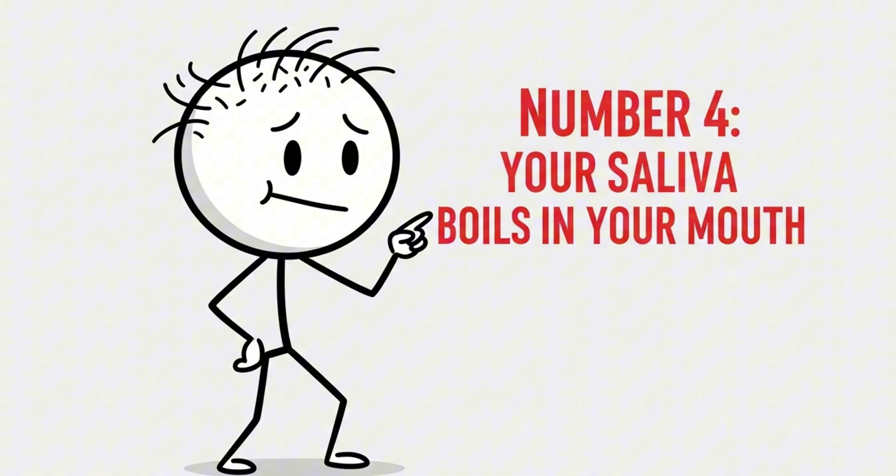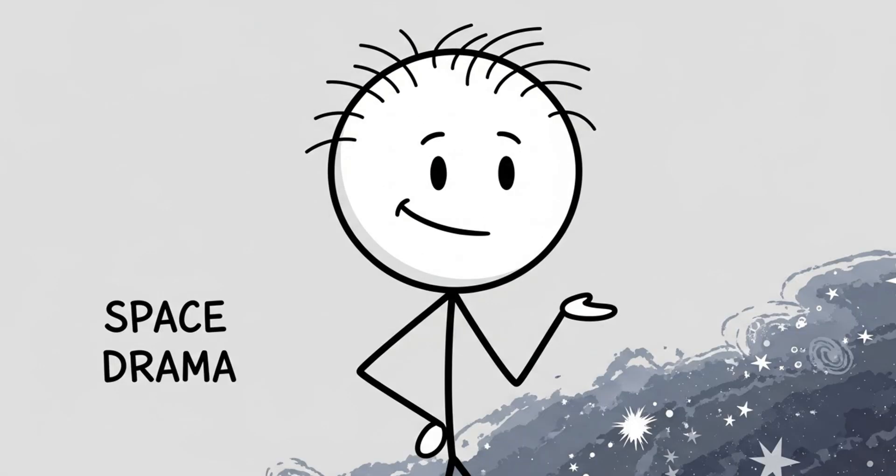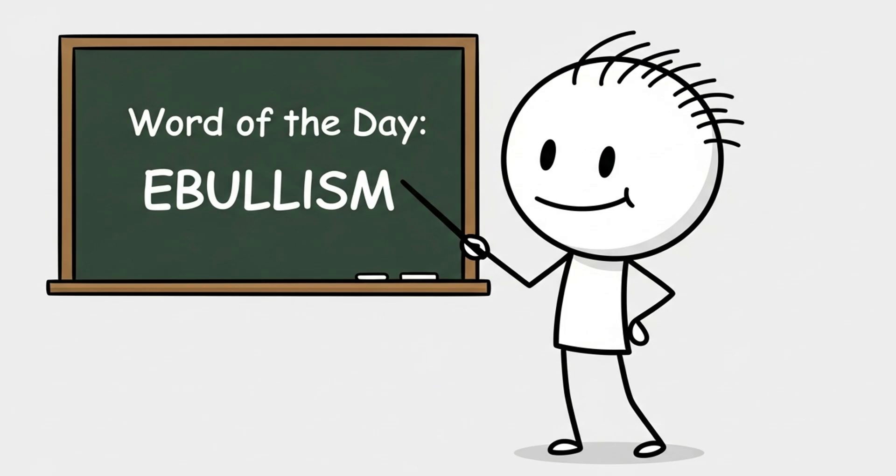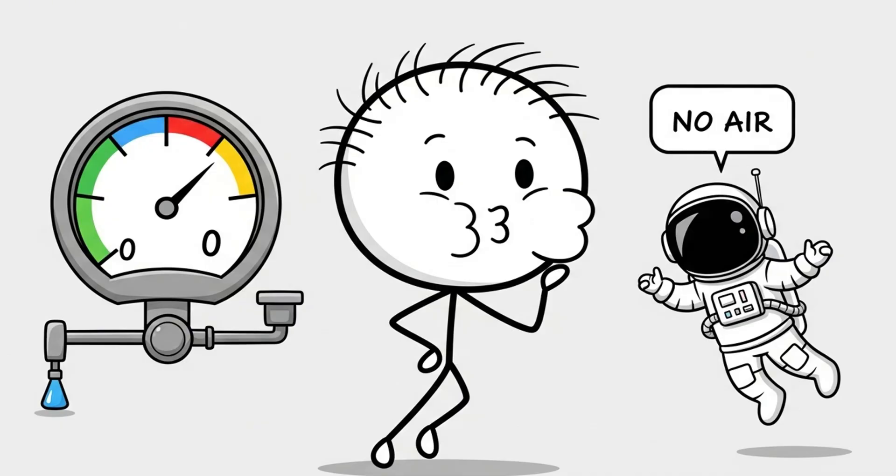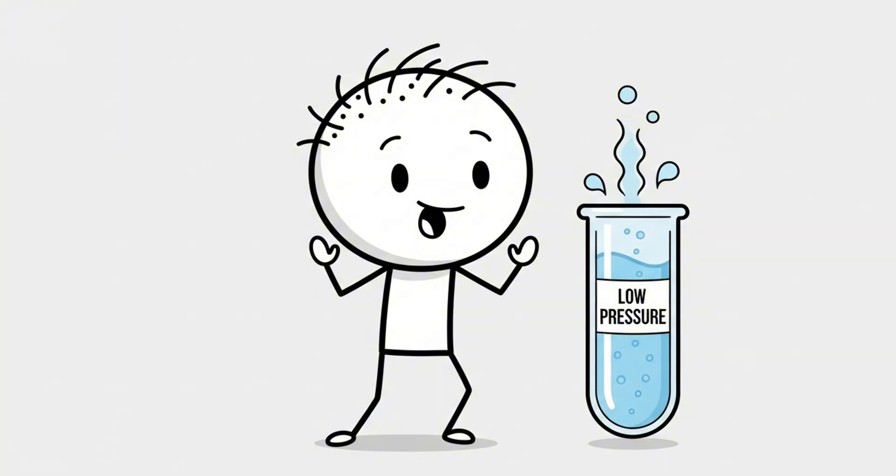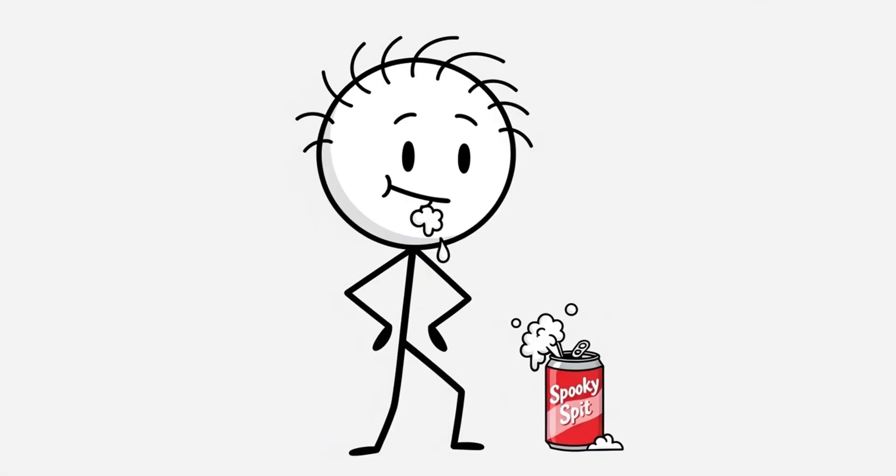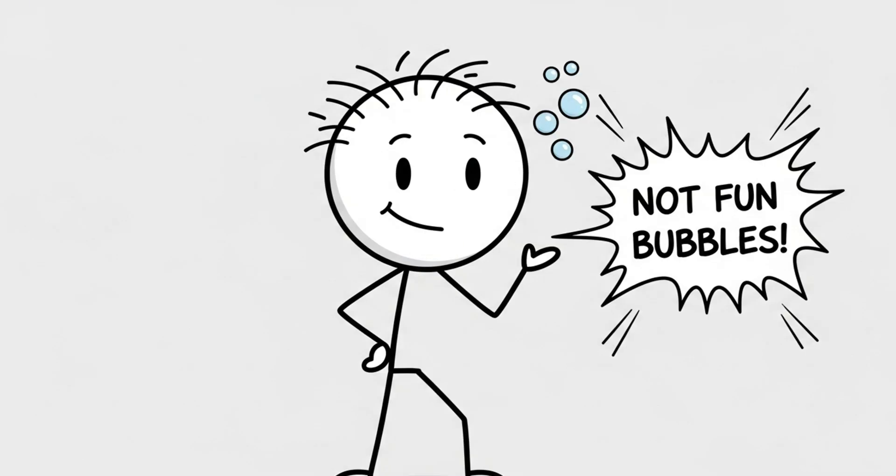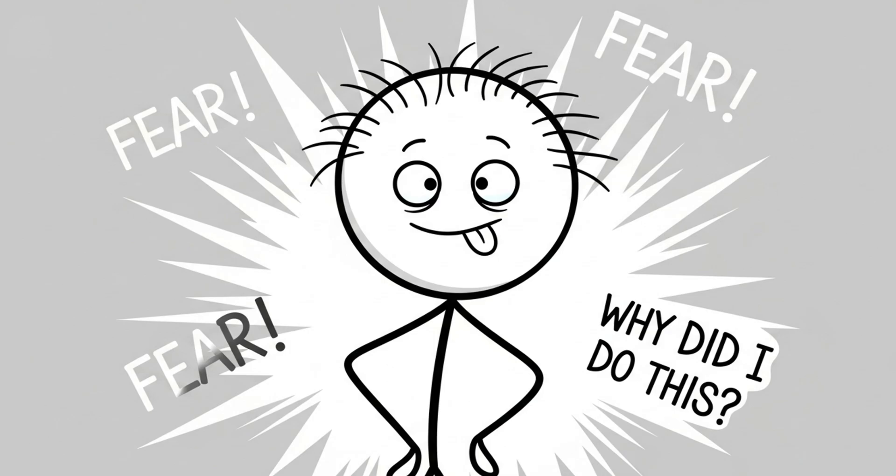Number four, your saliva boils in your mouth. Here's a fun image. Your spit turning into boiling bubbles while it's still in your mouth. No flames, no heat, just space being extra again. This is called ebullism, and it happens when liquids in your body vaporize due to the lack of atmospheric pressure. Space doesn't care if something's hot or cold. If it's a liquid and the pressure drops low enough, it's going to boil. That means your saliva, tears and moisture in your eyes and tongue will start bubbling. Your mouth won't be dry, it'll be fizzing like a haunted soda can. And don't get excited about the bubbles. You won't be tasting cherry cola. You'll be tasting raw panic and bad decisions.